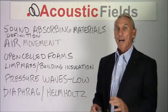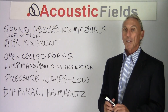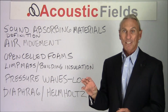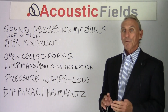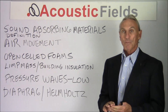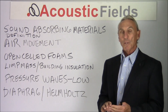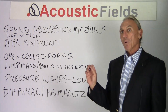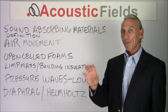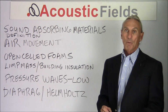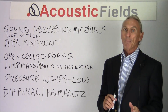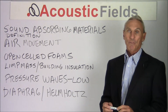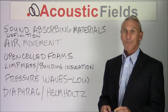There are two basic kinds of sound absorption processes. There's air movement, or molecular velocity, which most of your foams — your open-celled acoustic foams and your building insulations, your limp mass absorbers — use that principle. It requires air movement moving through the particular sound absorbing material, and through that movement through the material, you get sound absorption.